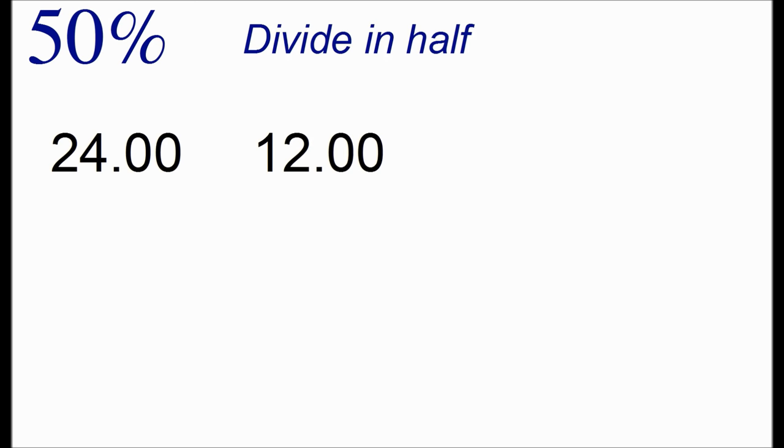To calculate 50% we simply take a number and divide it in half. We divide it by 2. So 24, we can divide that by 2 to get 12 and 5.6 we can divide that by 2 to get 2.8.